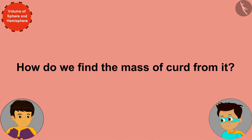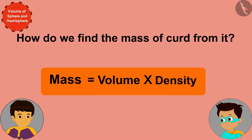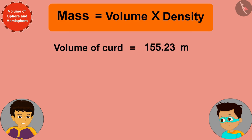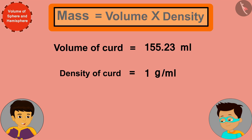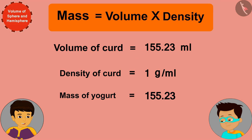But how do we find the mass of the curd from it? Mass is the product of volume and density. We know the volume of the curd, and we also know that the density of curd is about 1 gram per milliliter. So, writing the volume of yogurt as 155.23 ml and density as 1 gram per milliliter will give us the mass of the curd.